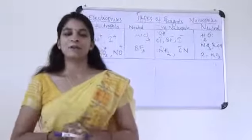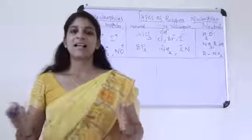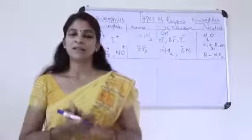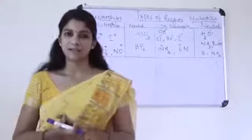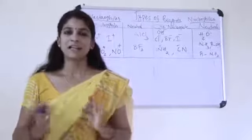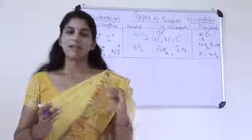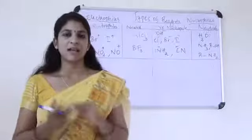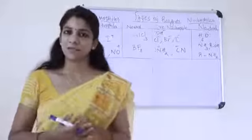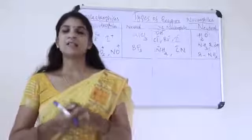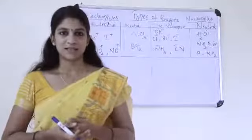Welcome all. Today we are going to discuss about types of reagent. In the last class we had seen about chemical reactions and how they are taking place. We know in a chemical reaction there are a substrate molecule, a reagent and a product. Substrate and reagent molecules interact together to form products. In this session we are going to discuss about types of reagent.